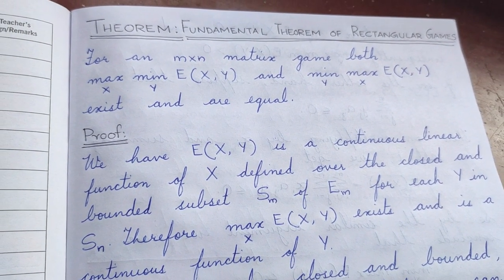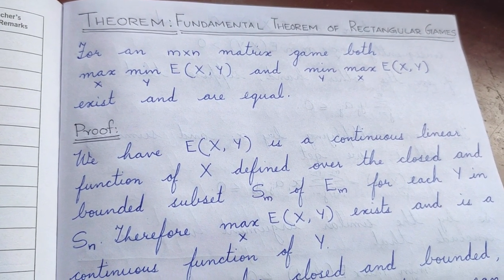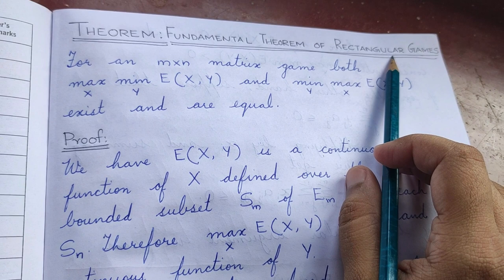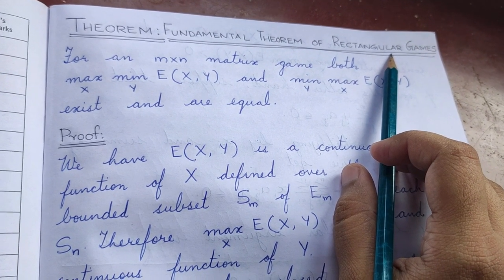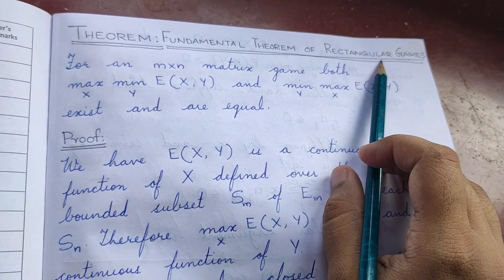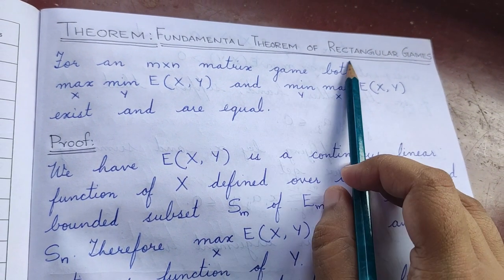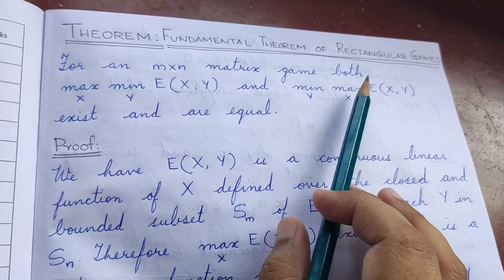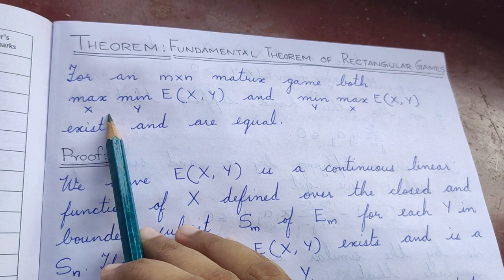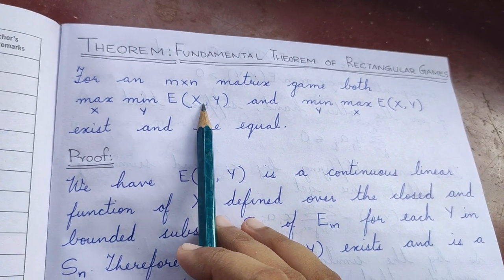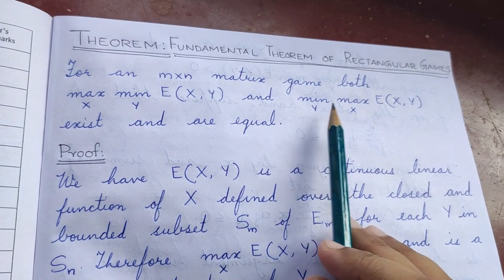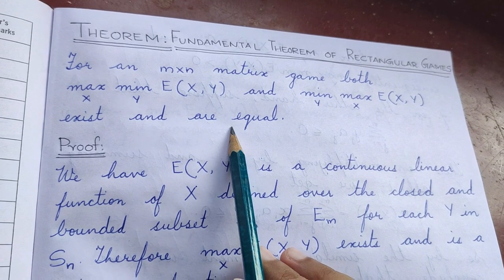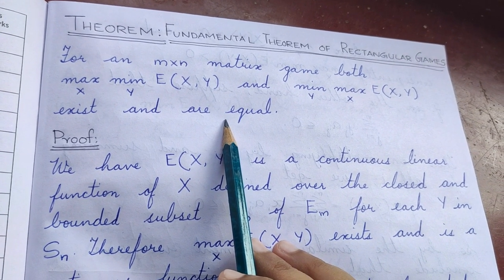Hello everyone. I am here to take the fundamental theorem of rectangular games in the portion theory of games. So first we look at what is the statement of the theorem. The theorem states that for an m by n matrix game, both maximum over x minimum over y E of xy, and minimum over y maximum over x E of xy exist and they are equal.